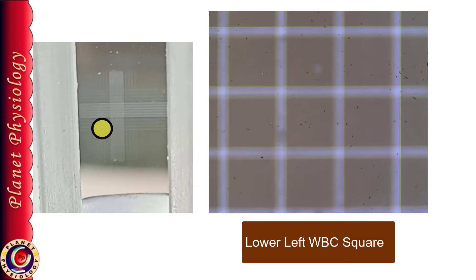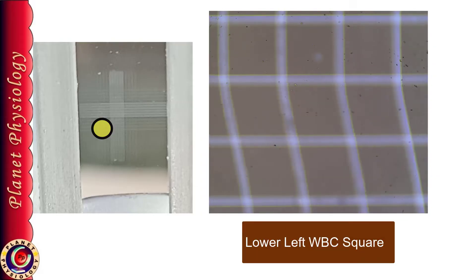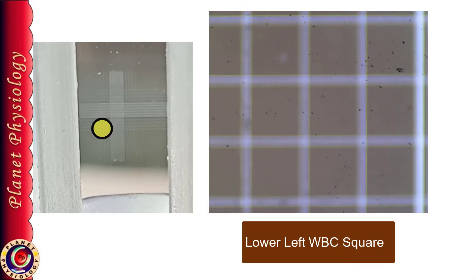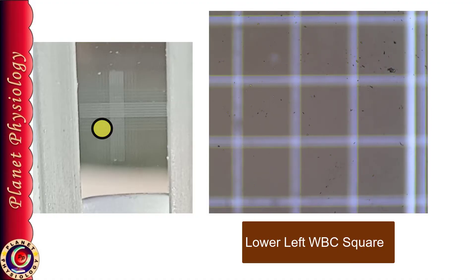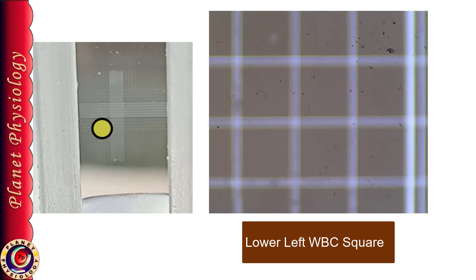Here I can see squares under low power. It means I have reached to the lower left corner WBC square. Once you are in any corner, you can either proceed further in the same direction or you can move sideways to get the another square. So I am moving upward further.